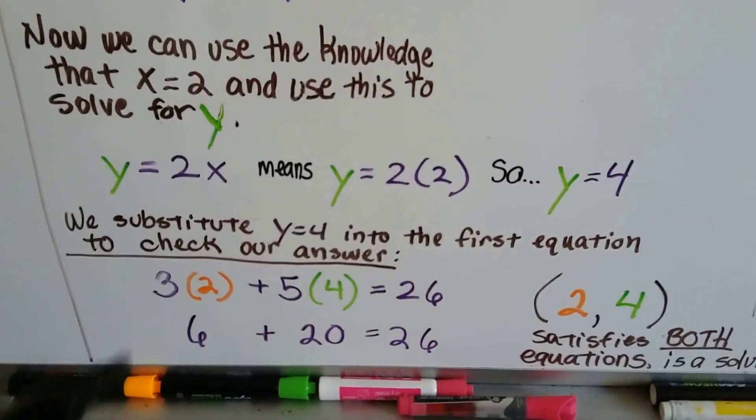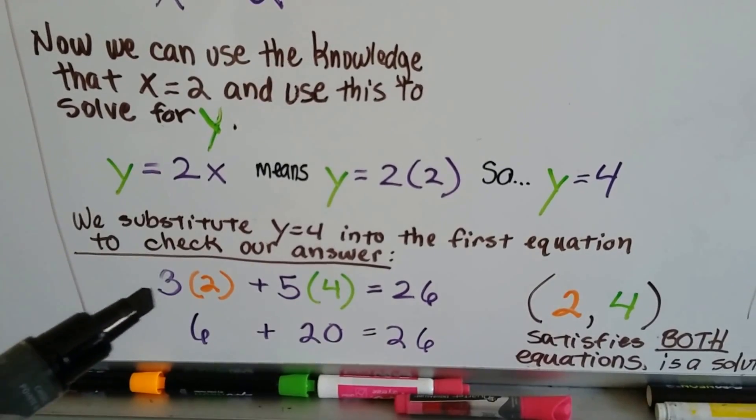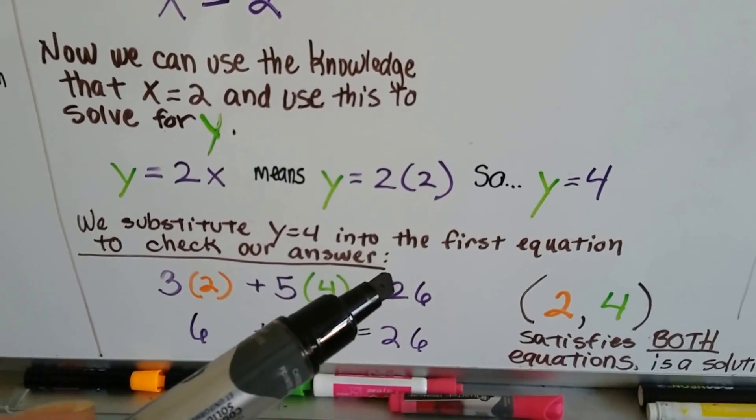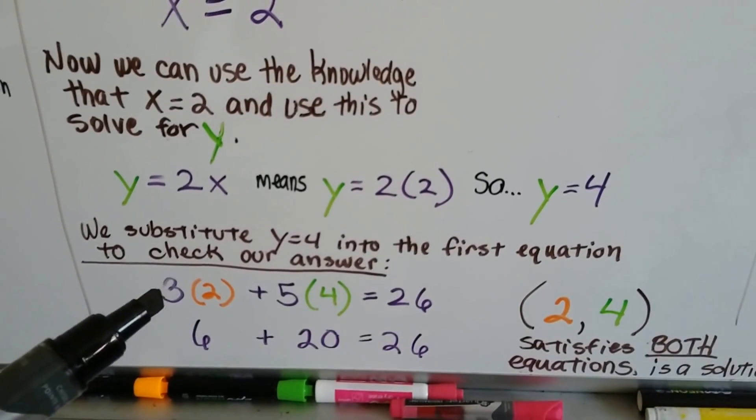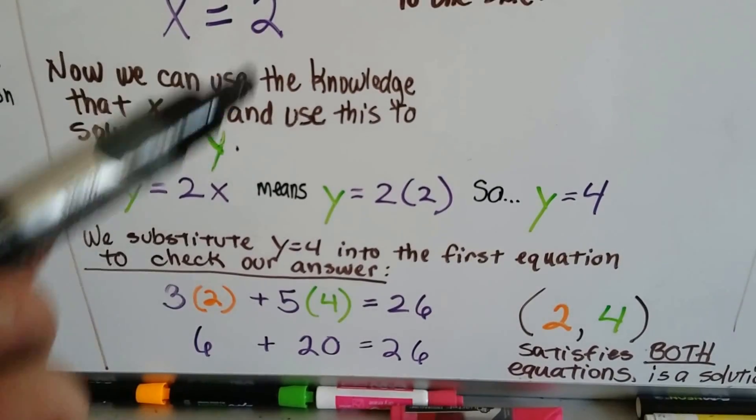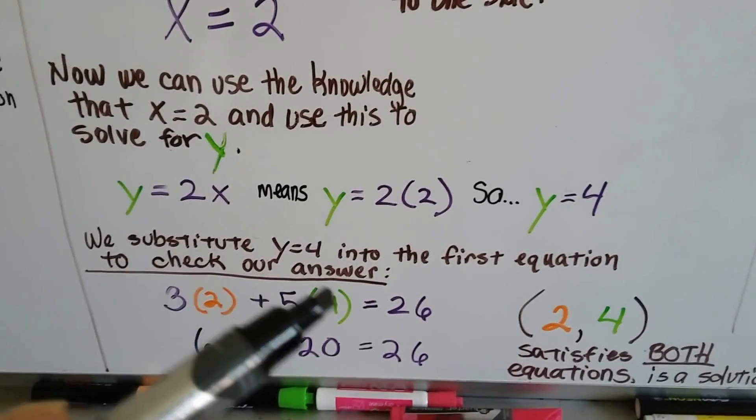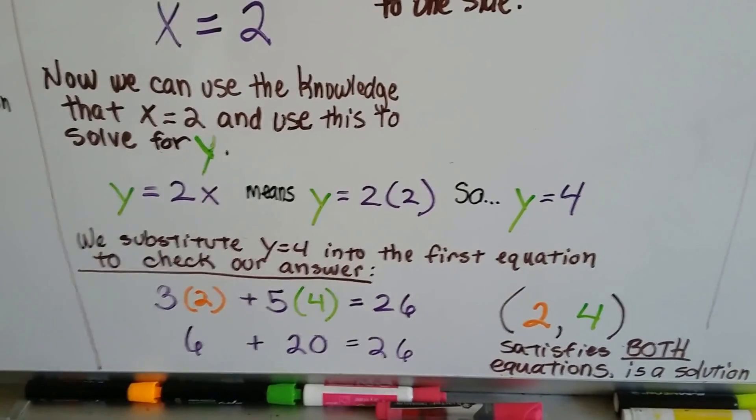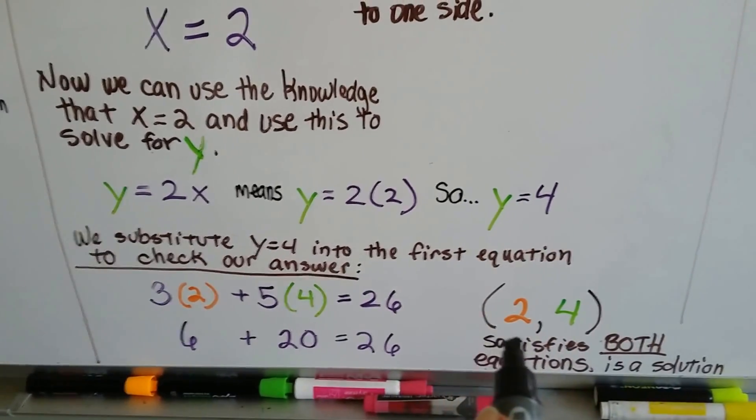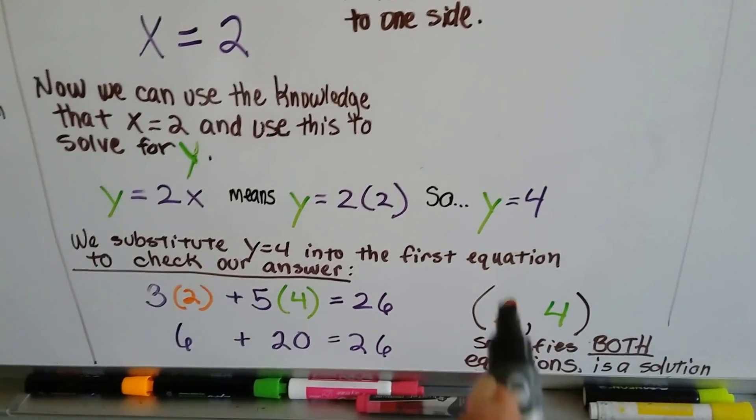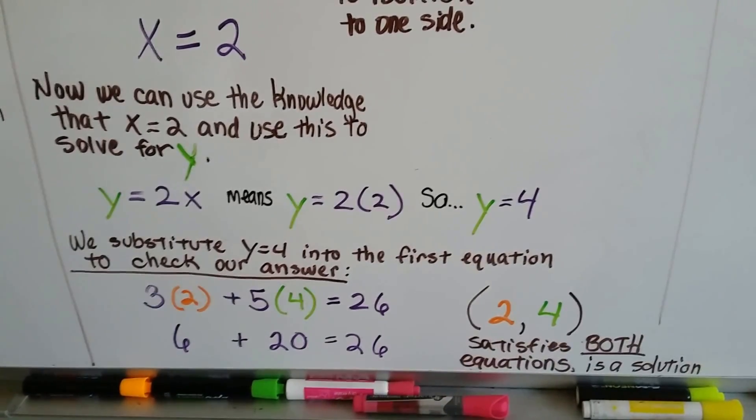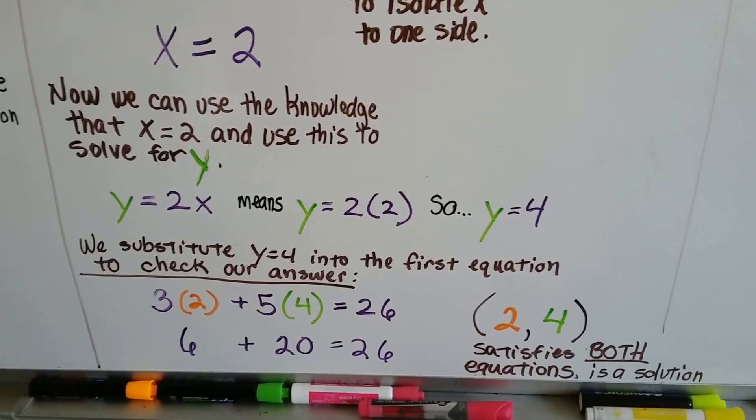We substitute y equals 4 into the first equation. So that said 3x plus 5y equals 26. That's 3 times 2, because x is 2. That's a 6. And 5 times 4, because the y is a 4. That's 20. 6 plus 20 is 26. So we have the ordered pair of 2 and 4. x is a 2, y is a 4. And it satisfies both equations, and it's a solution to the system of equations.